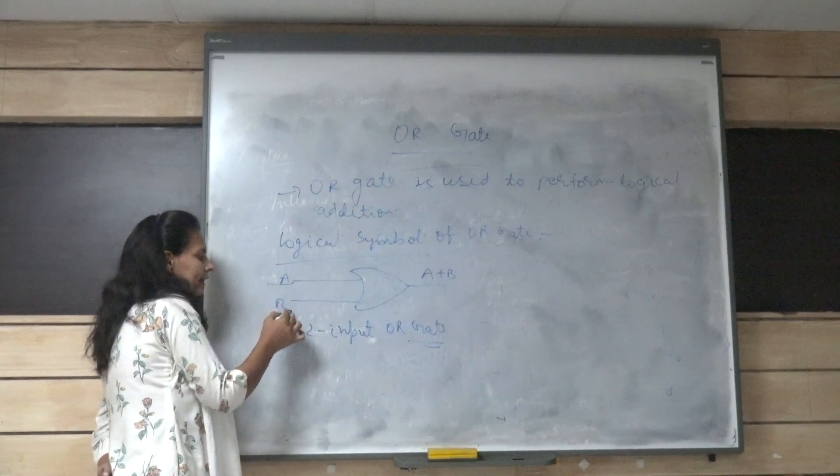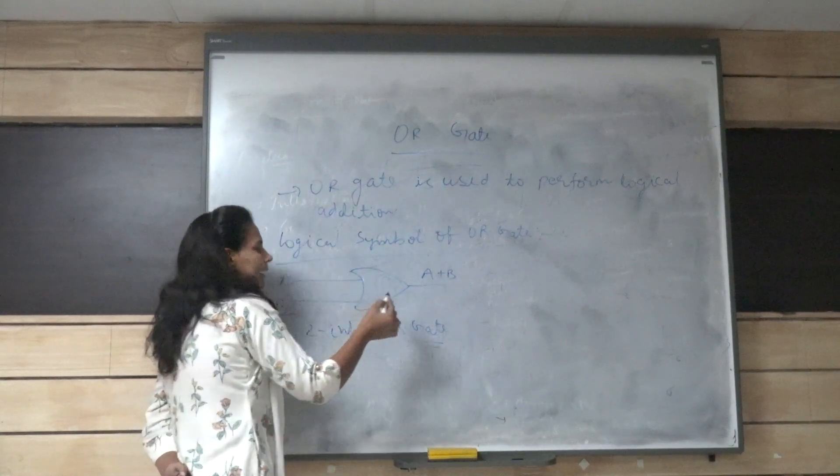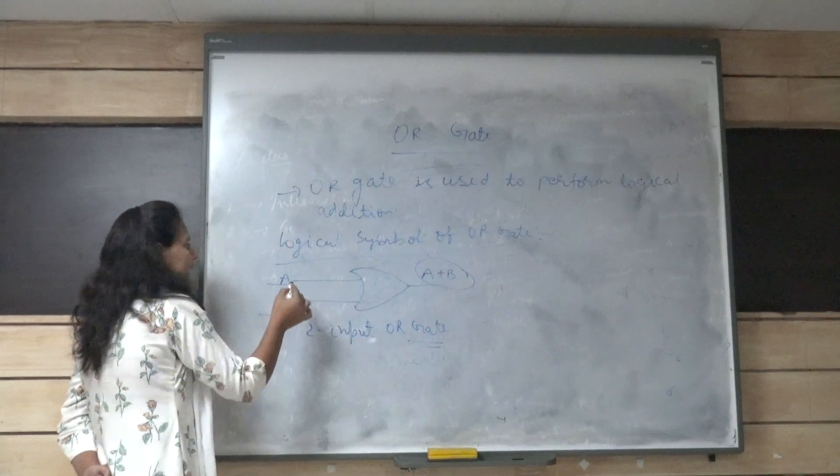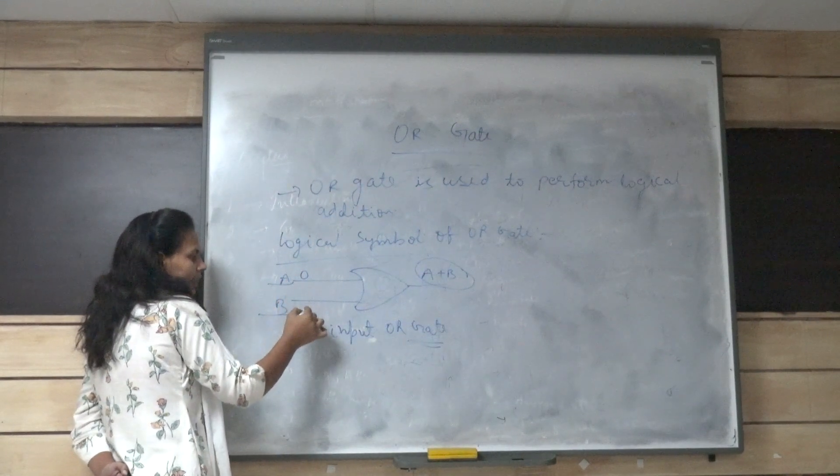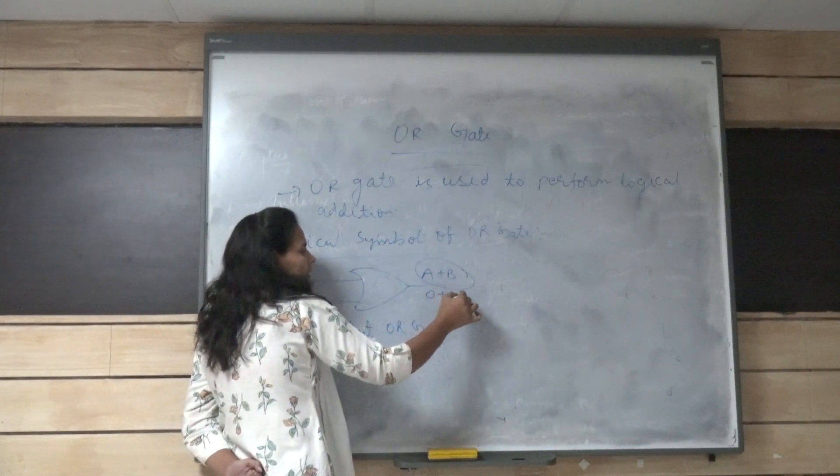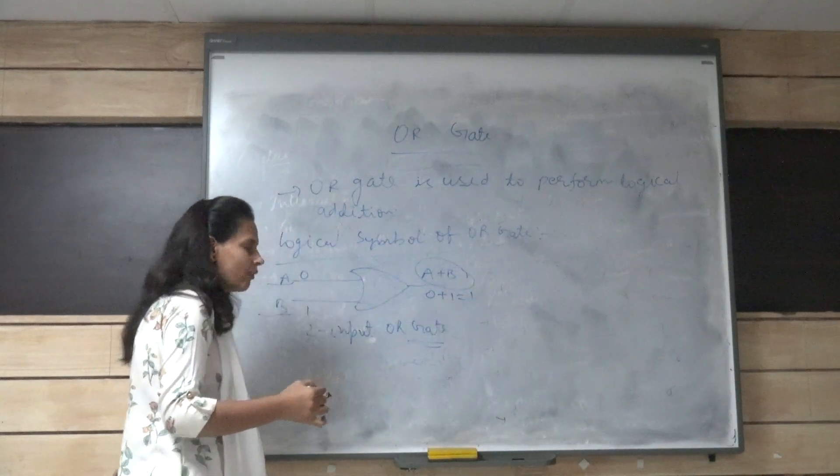Here, A and B are the inputs and A plus B is the output. Suppose A is 0 and B is 1, then the output of OR gate will be 0 plus 1. So it will be 1.